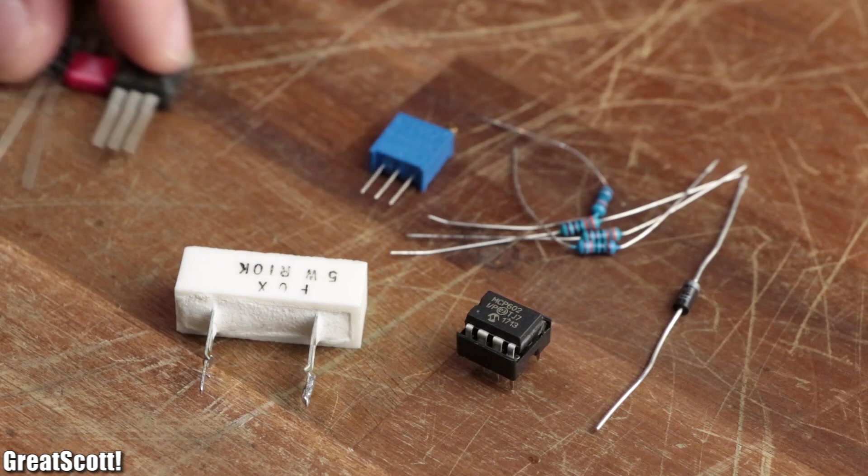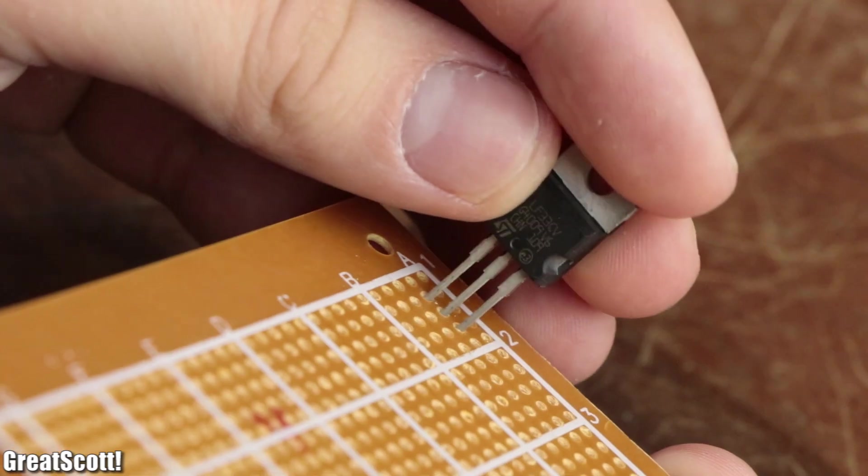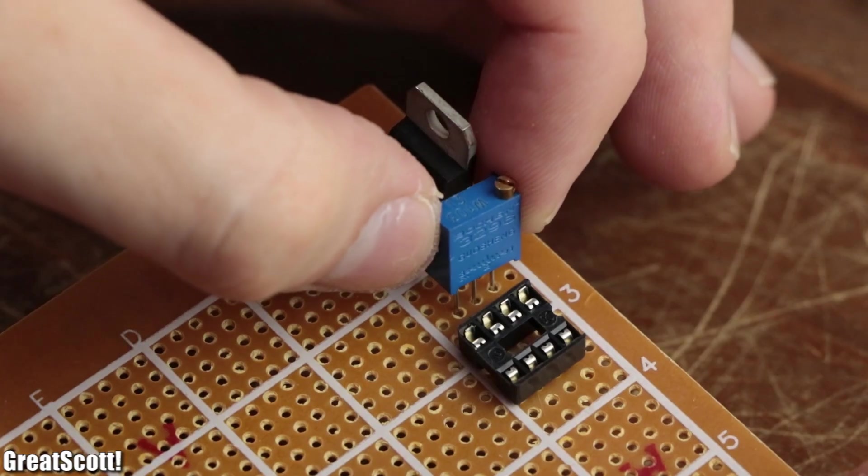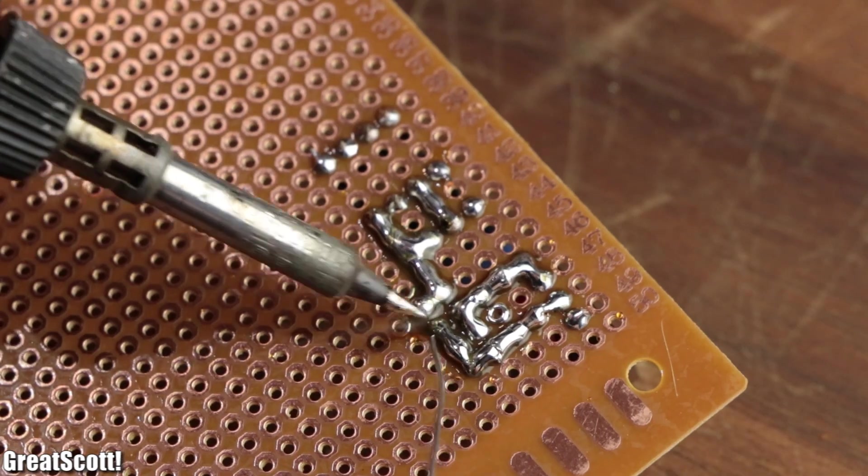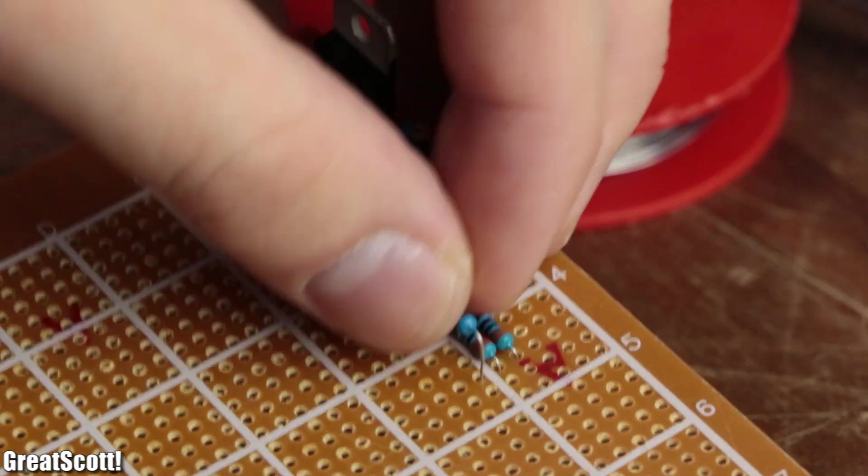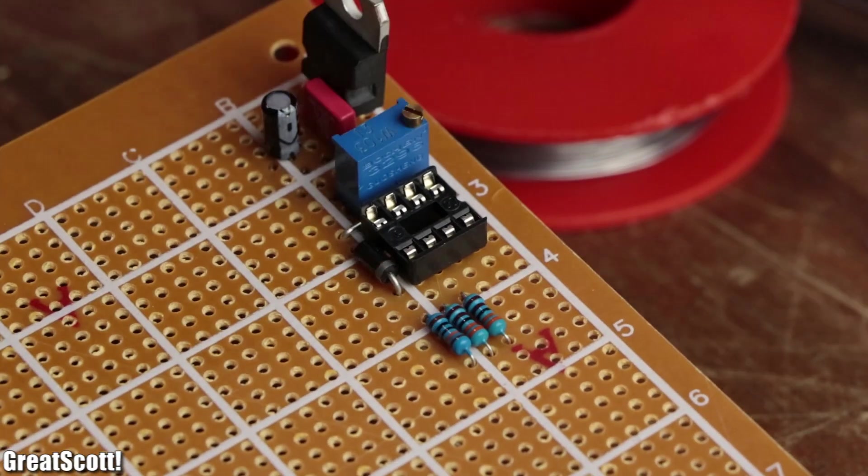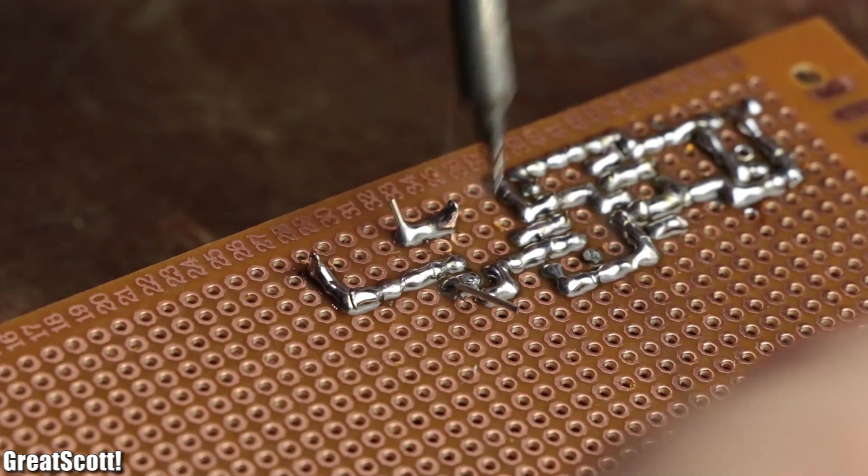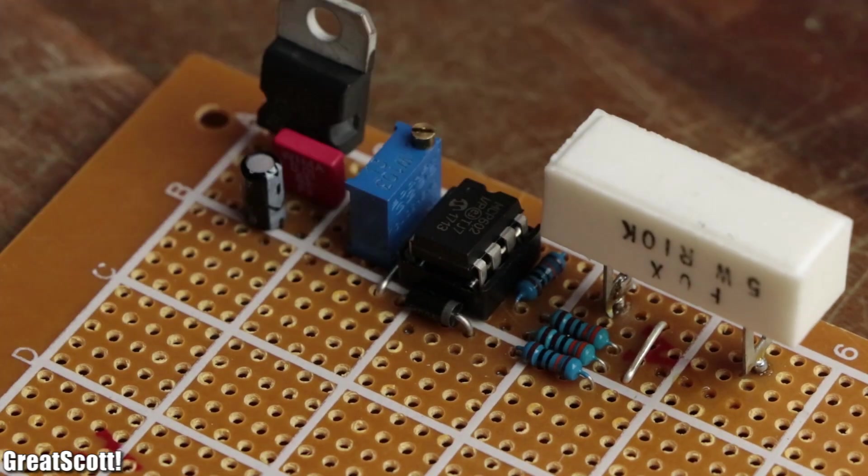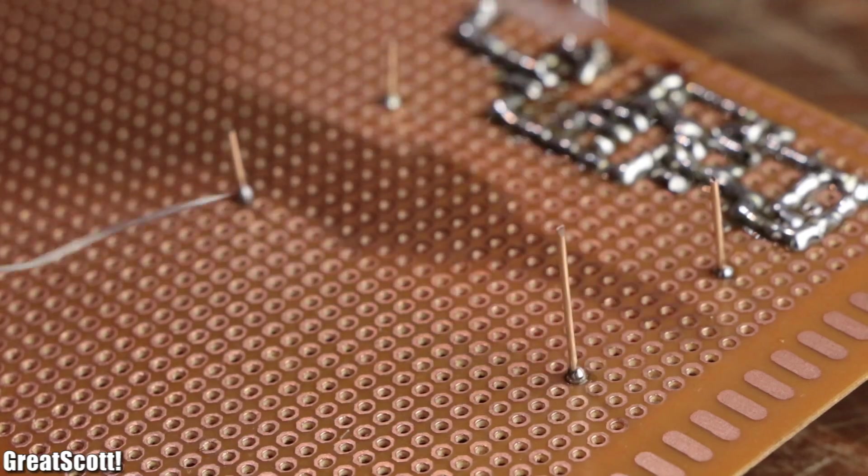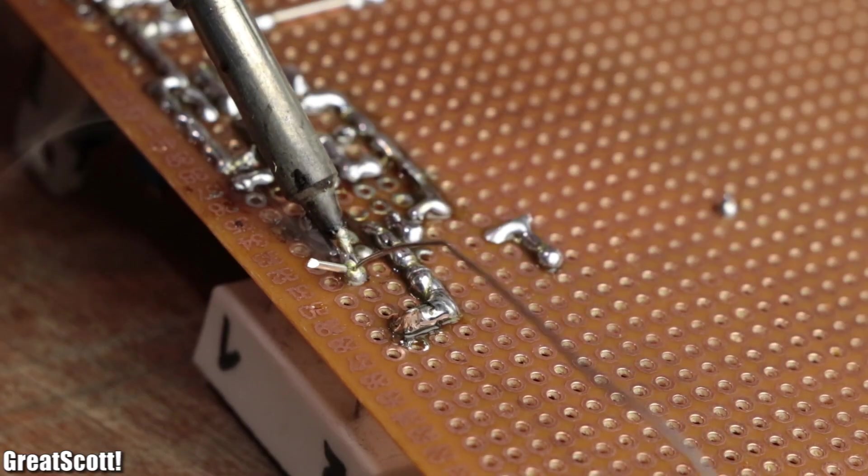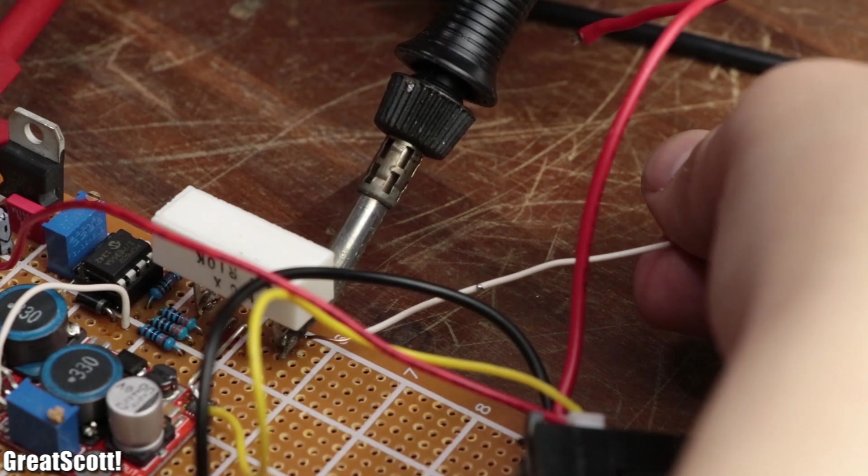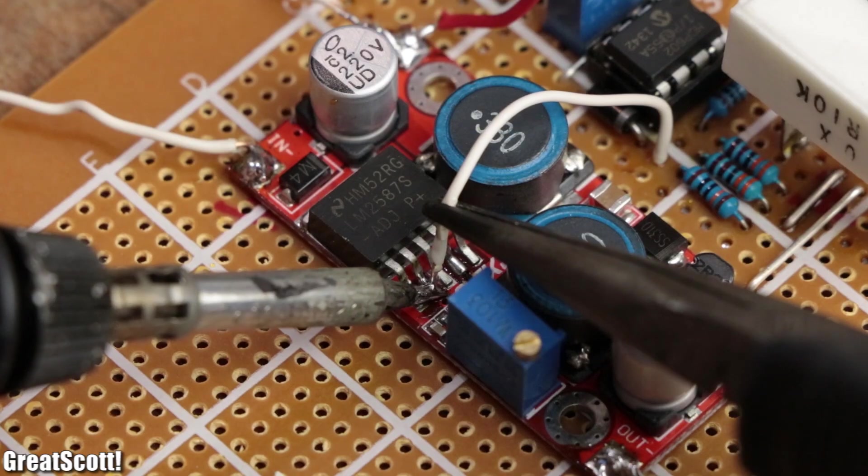So I gathered the required components for the circuit and connected them all to one another according to my schematic on a piece of perfboard. And if you are interested in creating a similar circuit, then you can have a look in the video description where you can find the schematic, a parts list and everything else important. Once I was done soldering, I added the buck boost converter to the perfboard, connected the current shunt in series to the output load and the voltage/current meter, and hooked up the output of the comparator to the feedback pin.